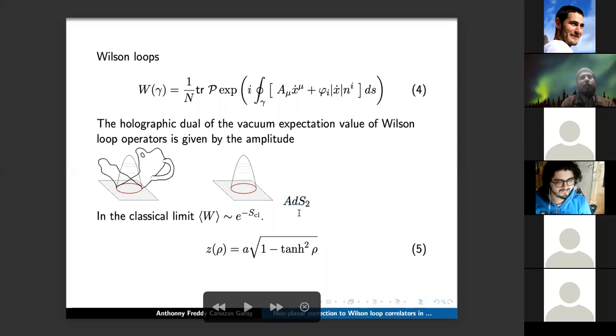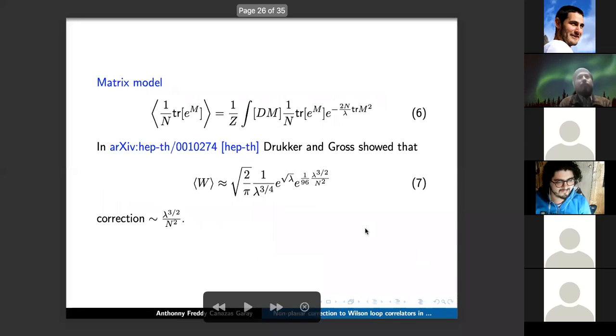Next. The circular Wilson loop can be described exactly by a matrix model. In fact, Drukker and Gross showed that for large N and large lambda it gives that expression. So here we can see the leading contribution, e to the square root of lambda, plus the first non-planar correction. This correction will be different in the case of the correlator.